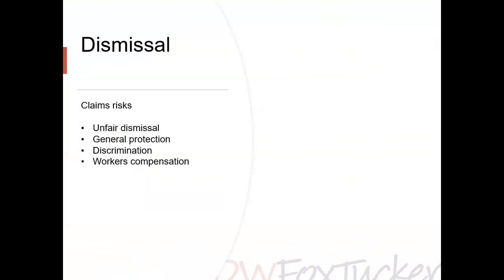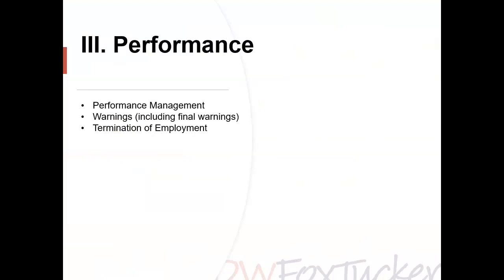The Commission has emphasised matters such as compliance with policies and procedures, as well as differential treatment between employees. Turning to the issue of valid reason, a finding of a valid reason remains of considerable importance when an employer is defending an unfair dismissal claim. The four main reasons an employer might justify a dismissal on are unsatisfactory performance, misconduct, incapacity, or operational requirements. The most common reason that an employment relationship comes to an end is that an employee's performance does not match the expectations of the employer.